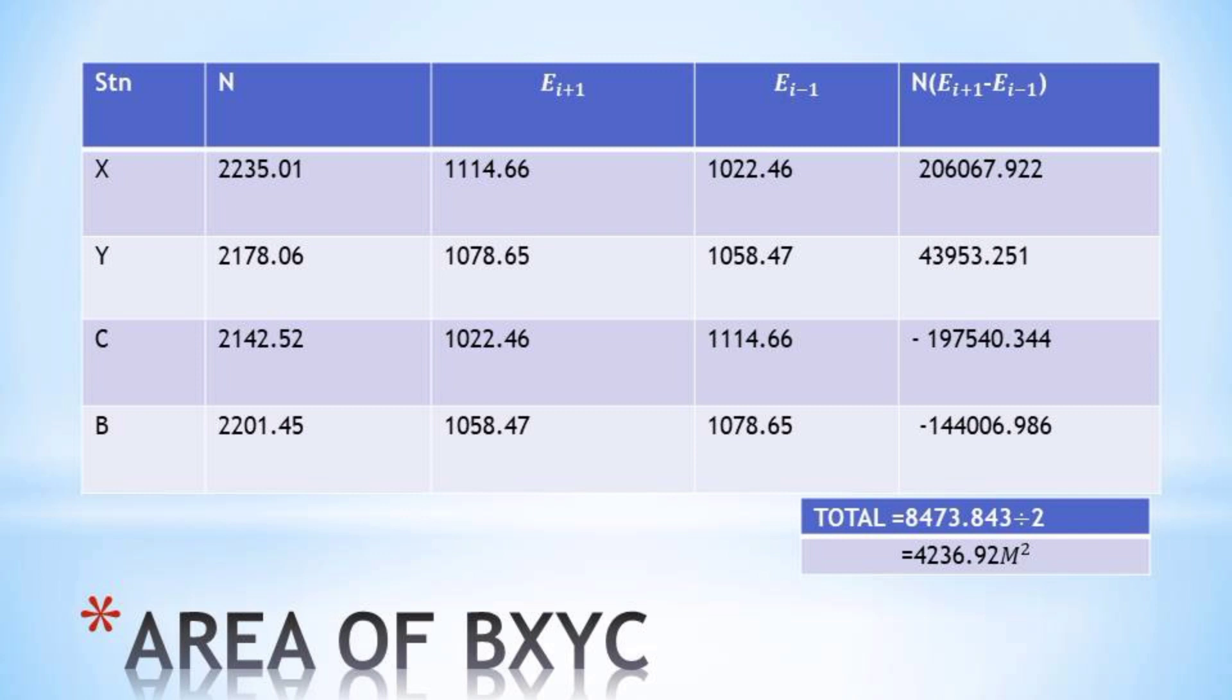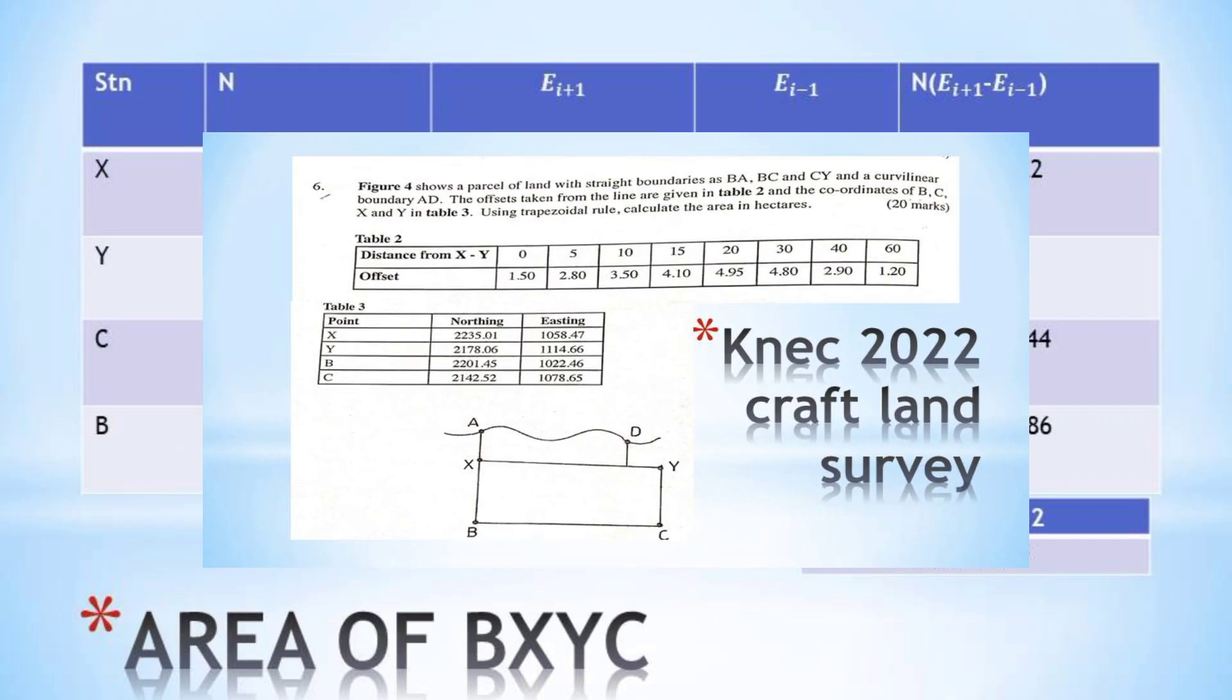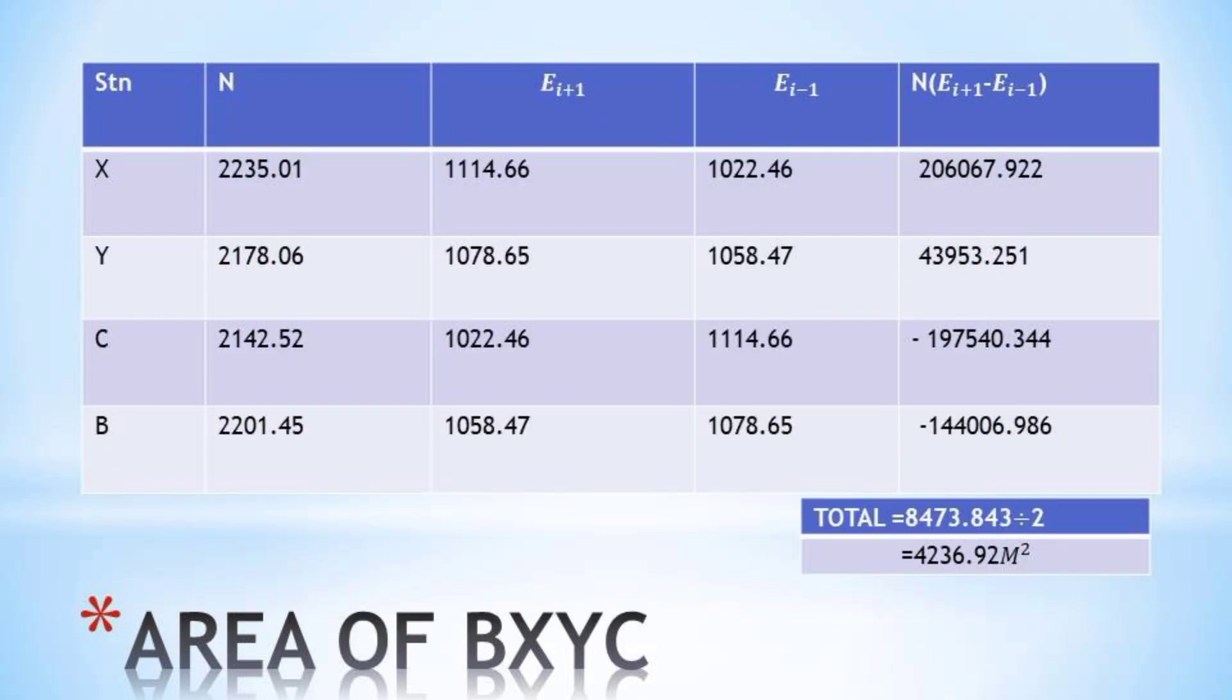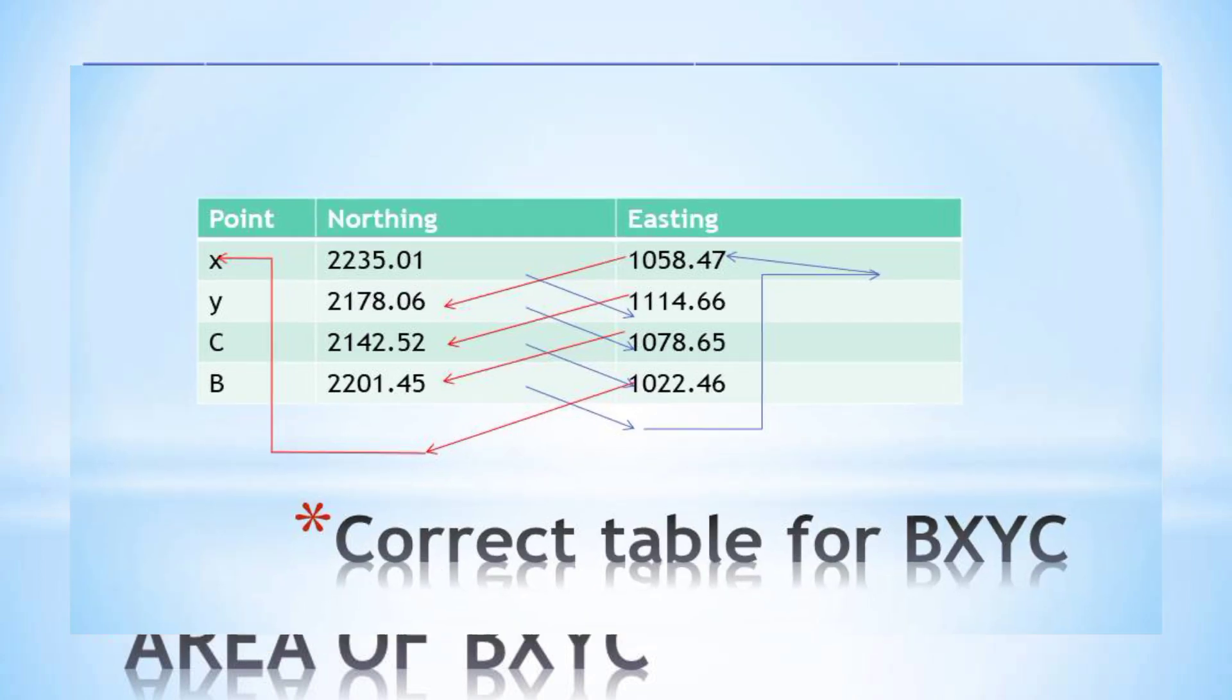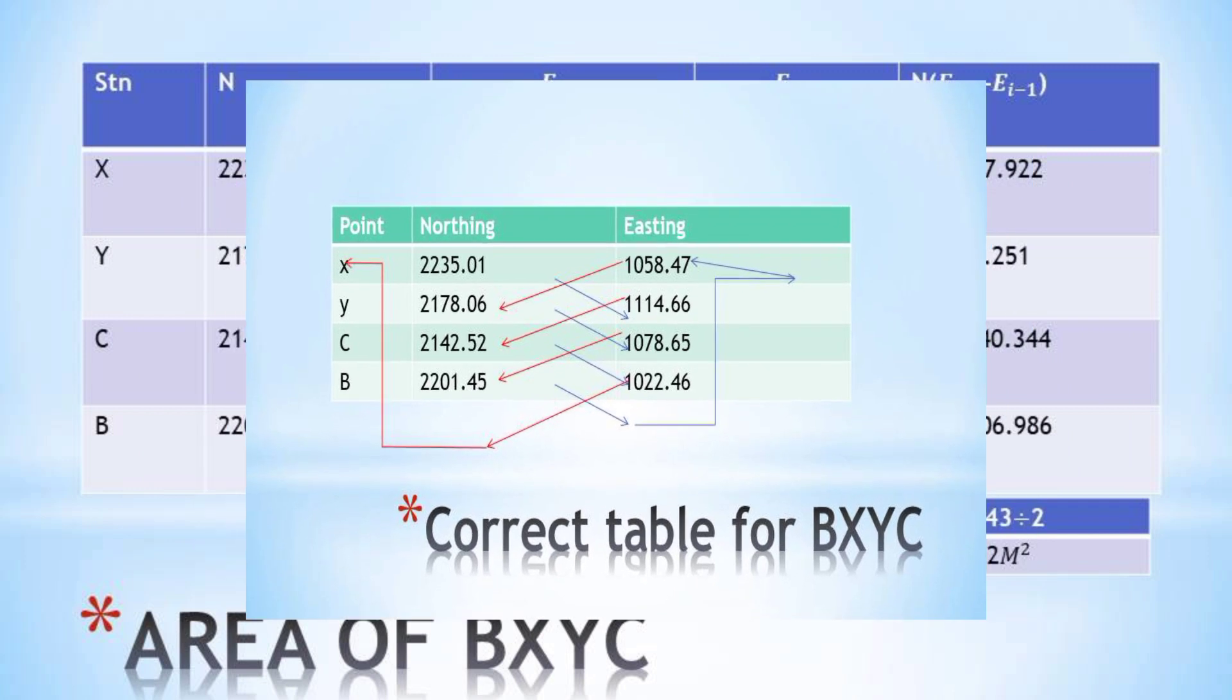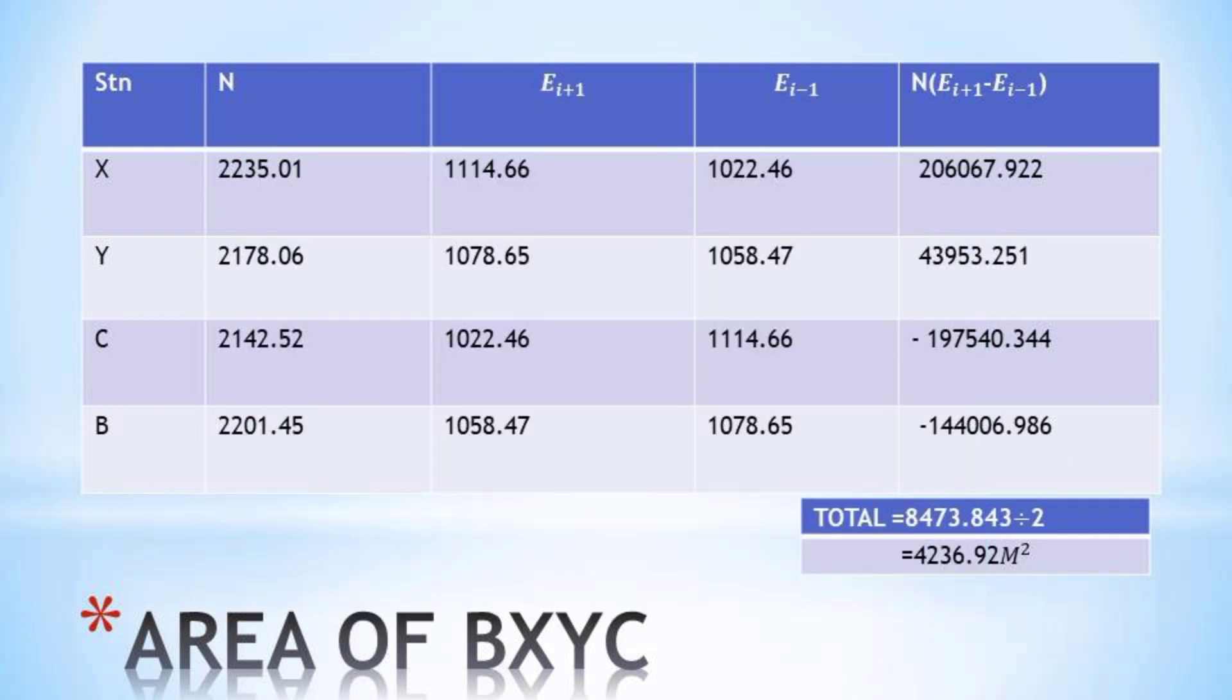Having finished that, we do the same for Y where we have the northing, and we write the easting of the point that is found after Y - that will be C - and then we write the easting for the point that is found before Y, which is X. Then we minus the eastings and multiply by the northings.